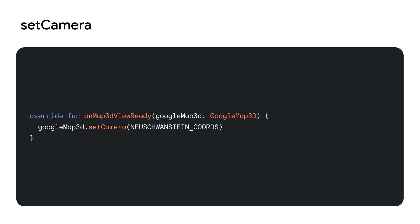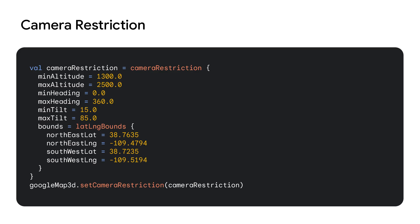With our camera in hand, we can call the setCamera method on the GoogleMap3D instance to reposition the camera. You can use camera restrictions to set boundaries on how the user can manipulate the camera, preventing them from wandering off into irrelevant parts of the globe. You can apply the minimum and maximum for the heading, tilt, and range, and also define a boundary for the range of the latitude and longitude.